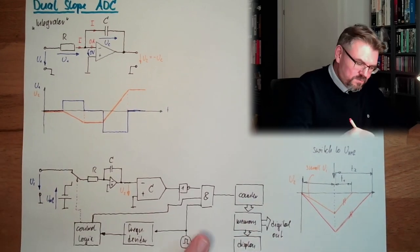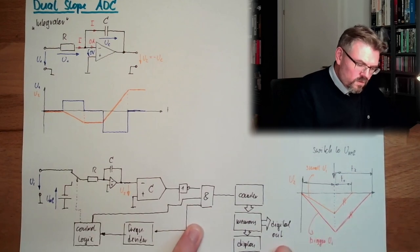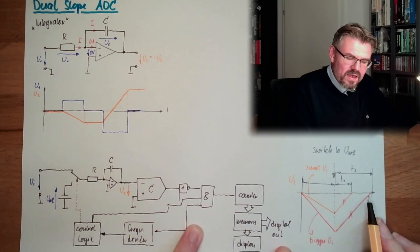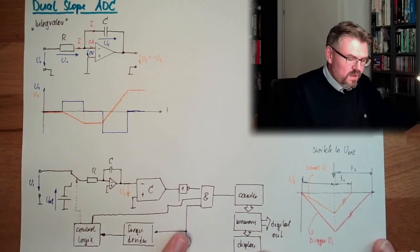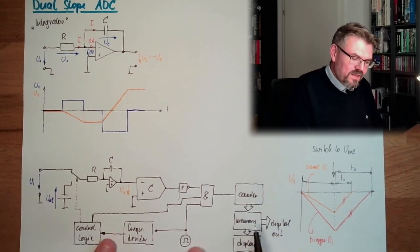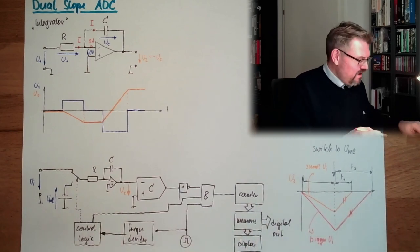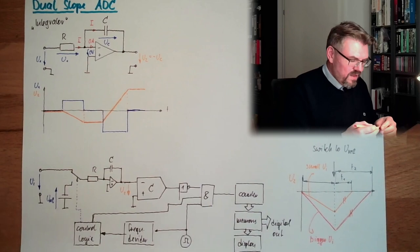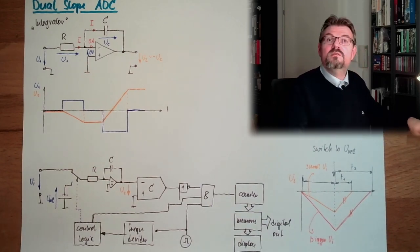This is bigger UI reflected by a bigger time, small UI reflected by a shorter time. And if I count here exactly this time, if I determine with my counter this time, I have later or at the end I have a counter value which is reflecting the UI. So I have digitized.